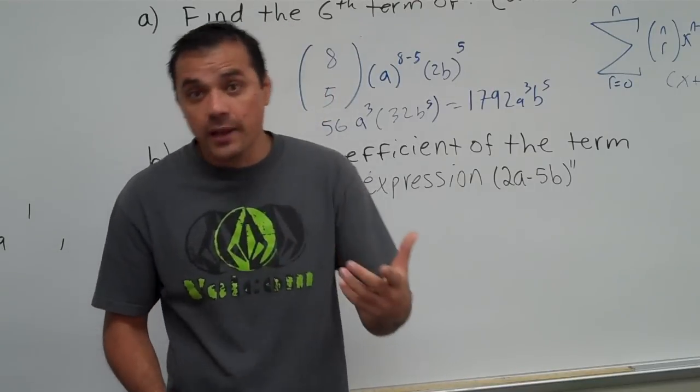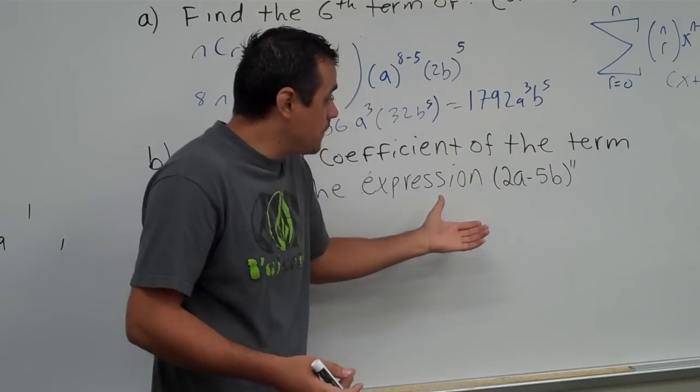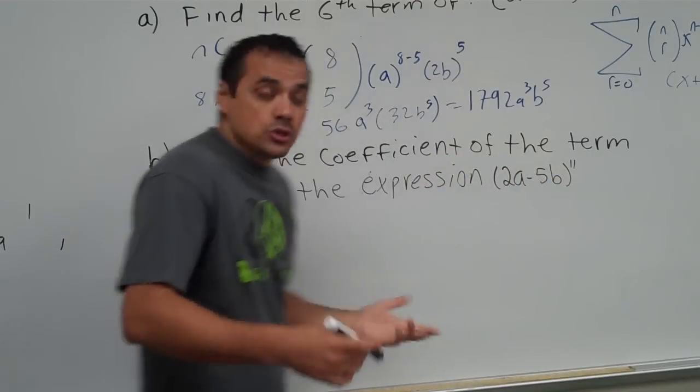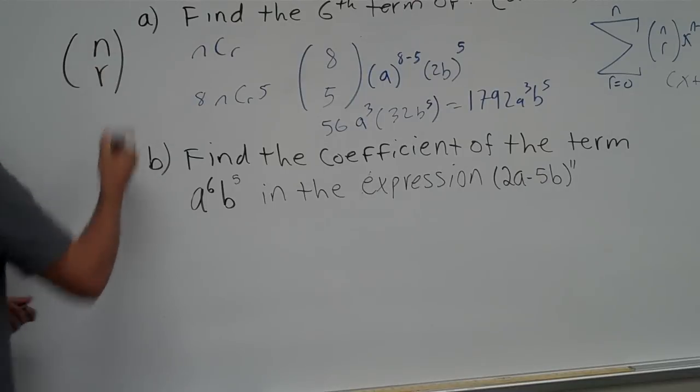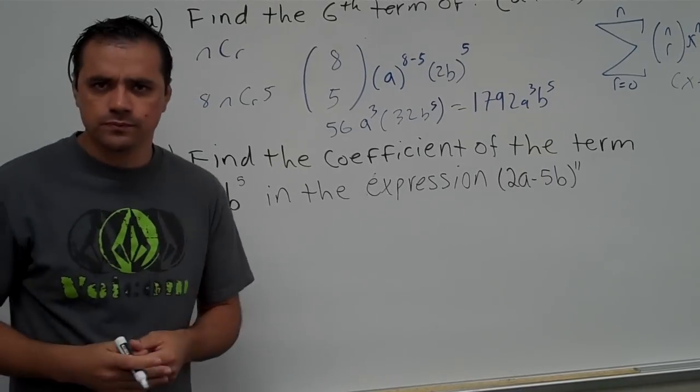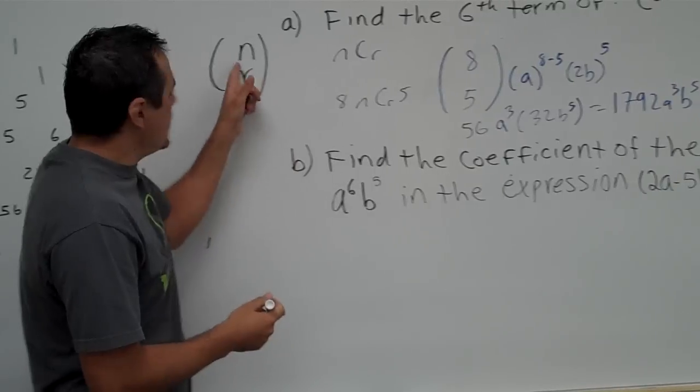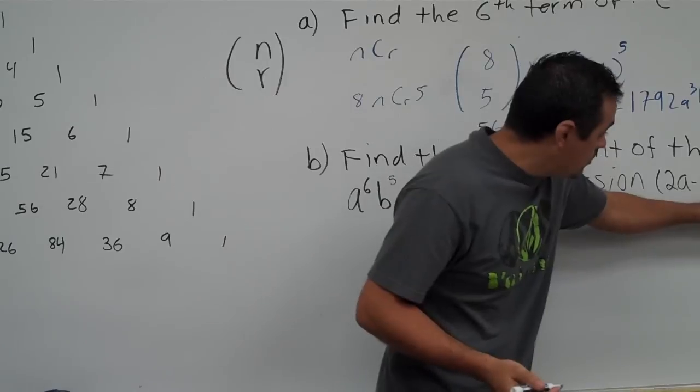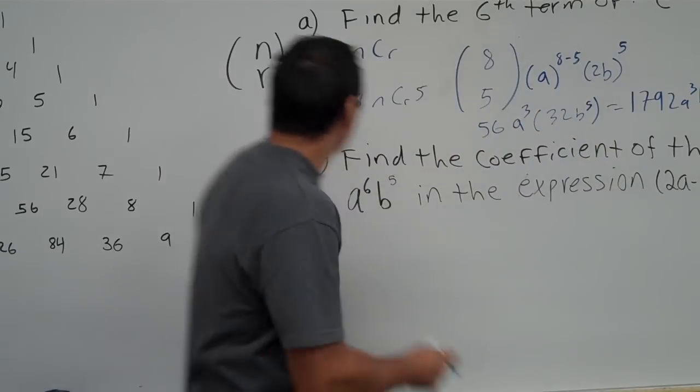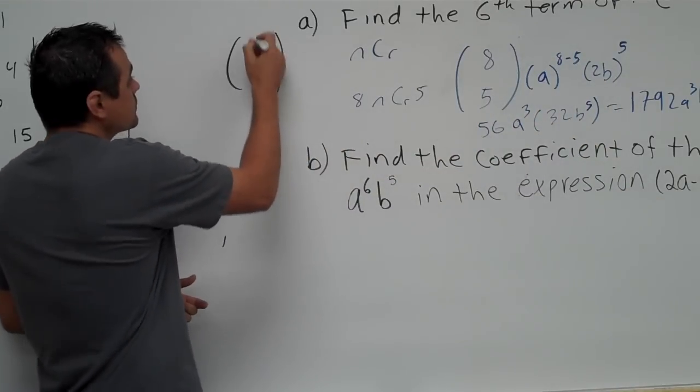So, let's set it up. Which numbers do we need to use? Remember that we need n choose r, it's going to give me my coefficient. Now, n, you all know, is the exponent of our binomial. Well, in this case, my binomial has an exponent of 11, so I know that n must be 11.